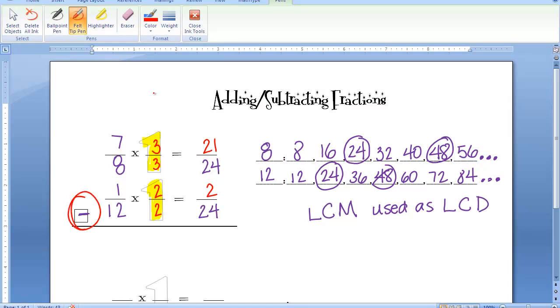Now, don't forget, this is a subtraction problem. 21 minus 2 is 19. And we keep the denominator the same. And this is our answer. It does not have to be reduced.